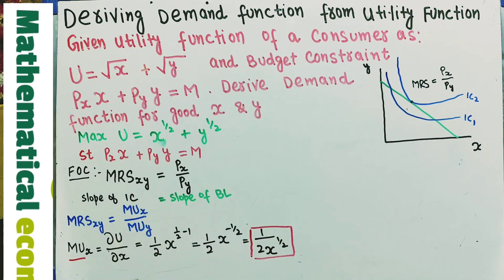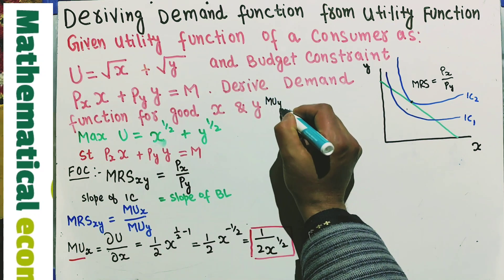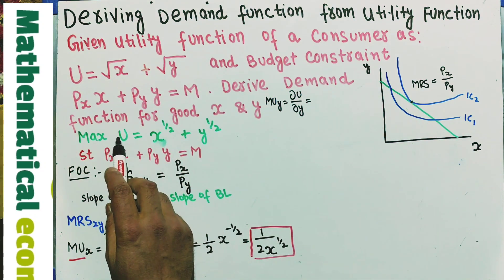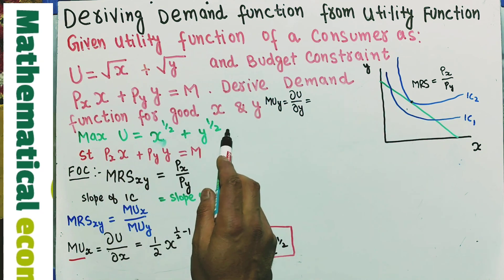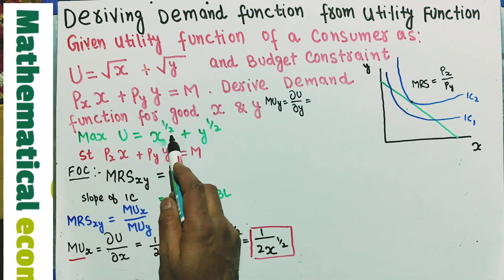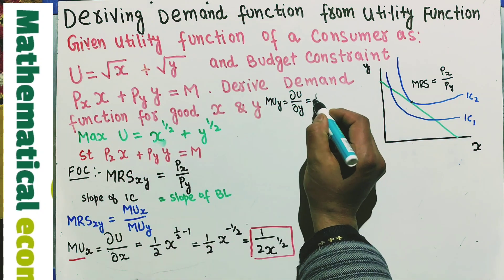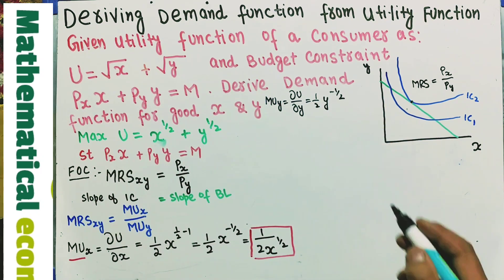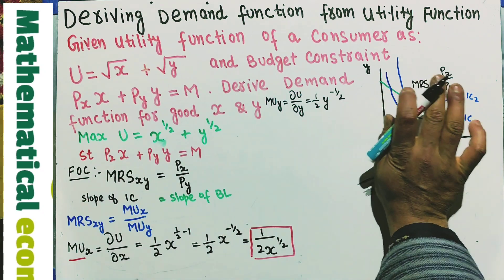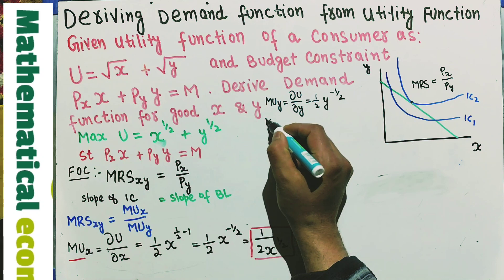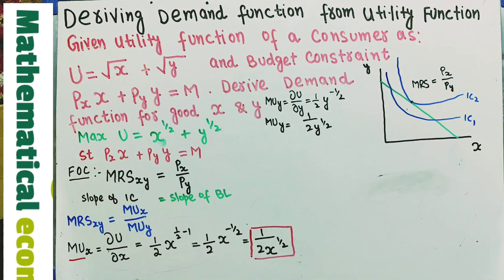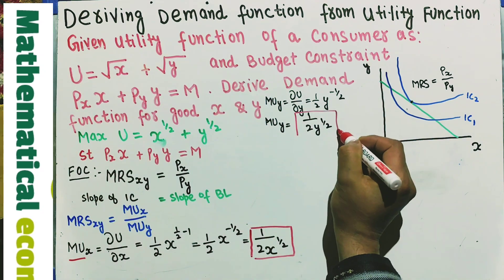Symmetrically, the marginal utility of good y is the partial derivative of the utility function with respect to y. Since x is treated as constant, its derivative is zero. Differentiating y^(1/2) with respect to y gives (1/2)·y^(1/2 − 1) = (1/2)·y^(−1/2). Solving further, MUy = 1 / (2·y^(1/2)). We are now done with the marginal utilities of both goods.